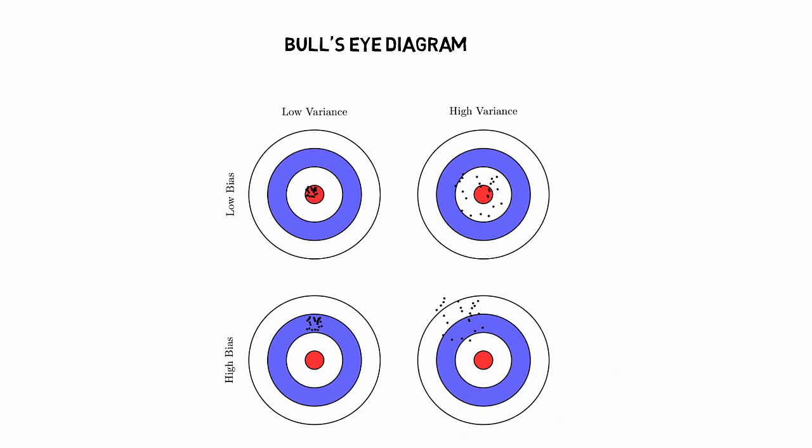Having high bias and low variance means the model is consistent but the predictions are far away from the target. Even this situation is not desirable. And having high bias and high variance is a total disaster. The model is not consistent and the predictions are highly variable.